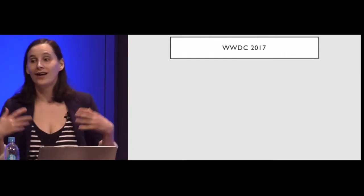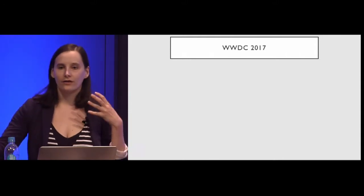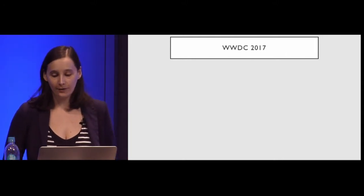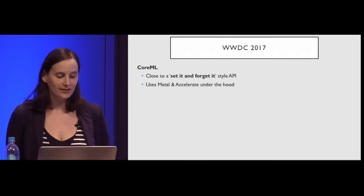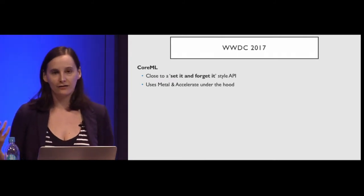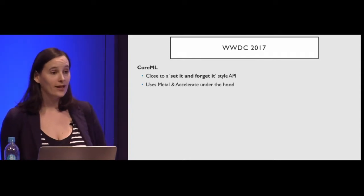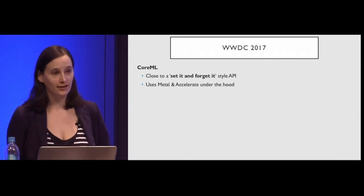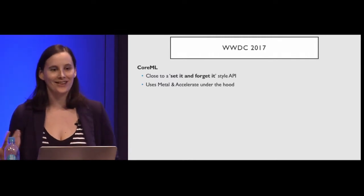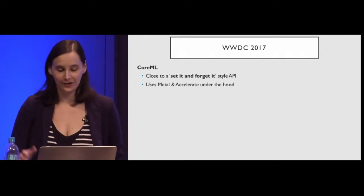2017 sees the introduction of CoreML. It's almost like a set-it-and-forget-it style API — you really can use it without fully understanding it. I think that's one of its greatest strengths and also one of its greatest weaknesses. The easier it is to do amazing stuff, the easier it is to do things really terribly.